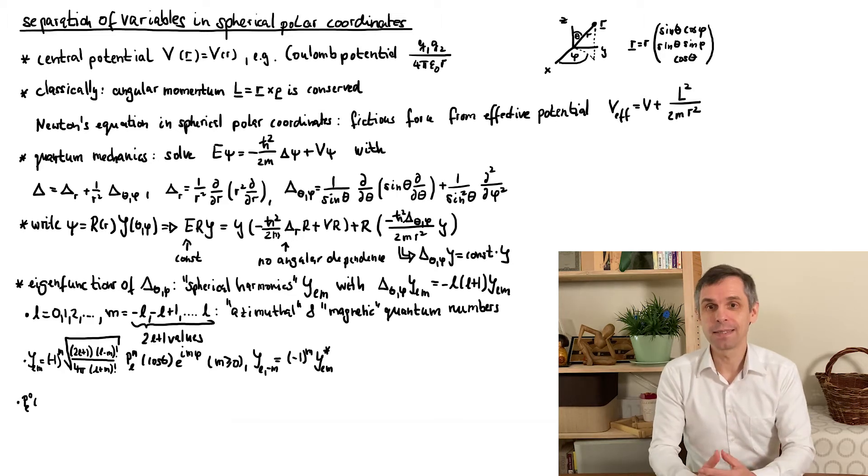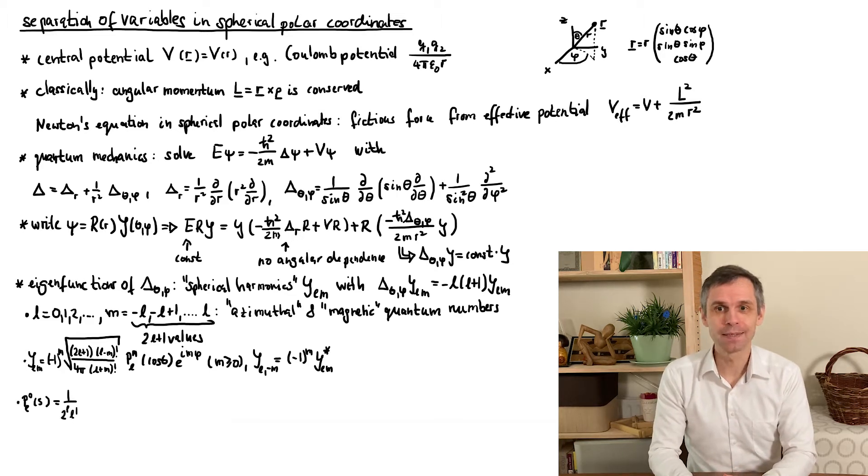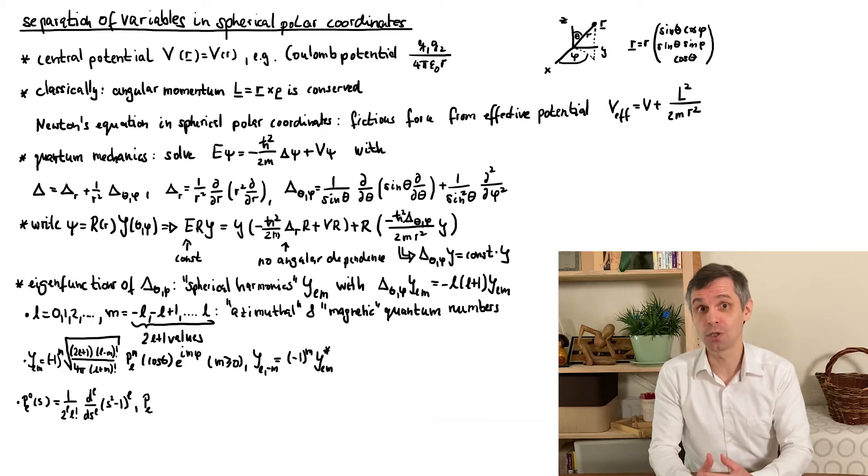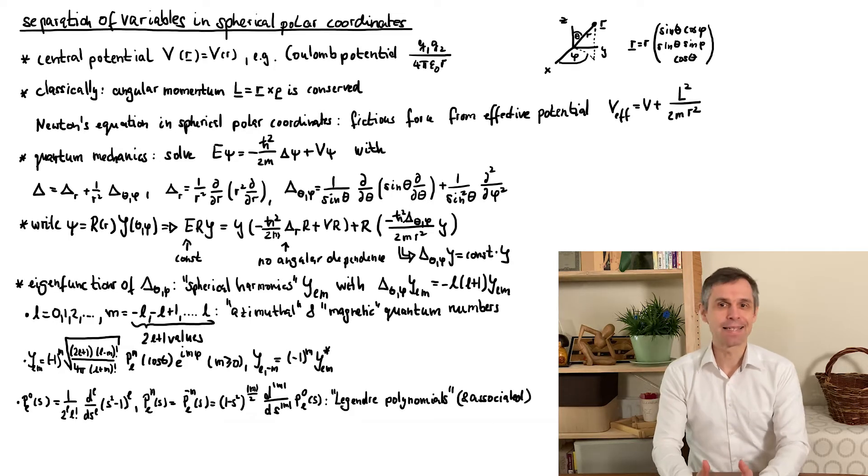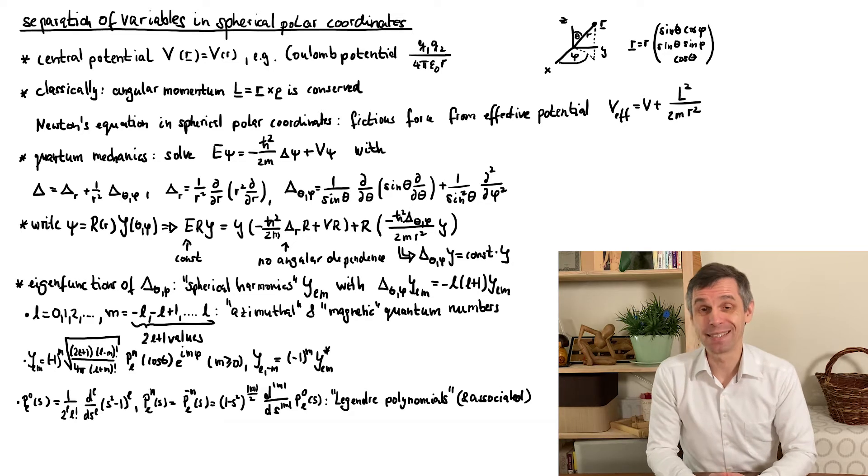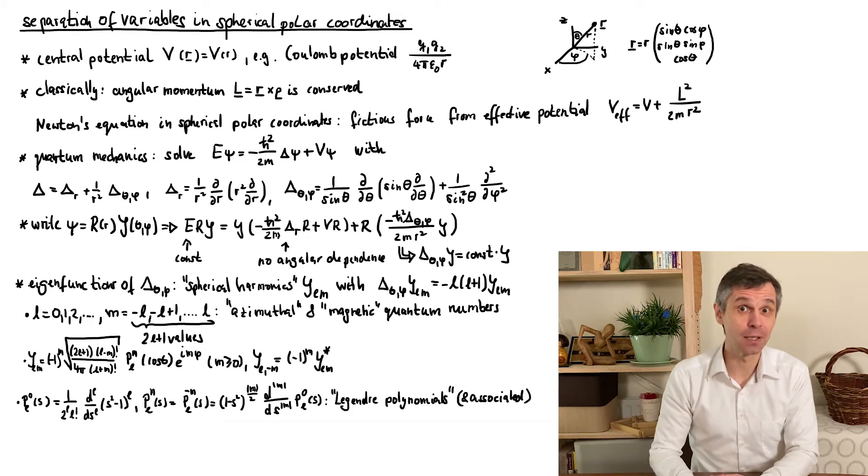The dependence on theta is quite a bit more complicated. It involves another set of orthogonal polynomials, the so-called Legendre polynomials, and their associated variants. They can be obtained as stated here. As I said, at this point this looks quite technical, but note that so far we have not made any contact to angular momentum.